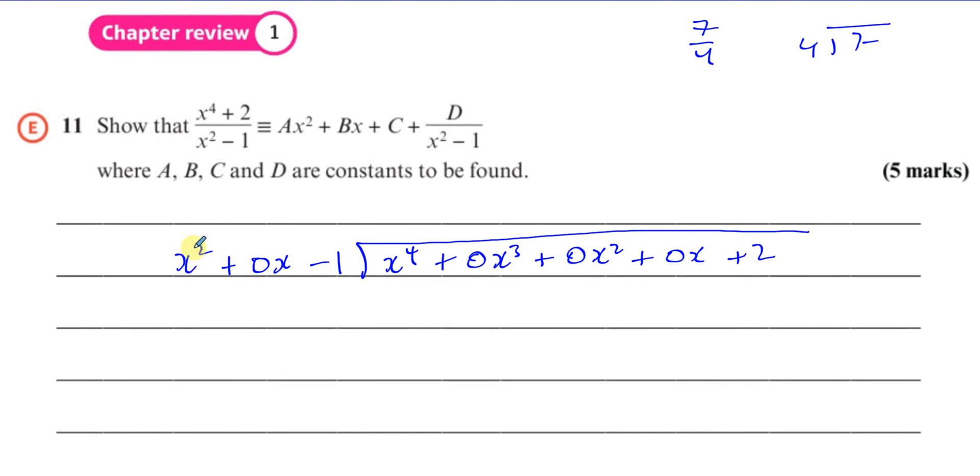Then we say, okay, x squared fits into x to the power of 4, x squared times, because x squared times x squared is x to the power of 4. Then you multiply x squared by these three terms here. So you're going to have x to the power of 4. That must always be the same, otherwise you've done something wrong. x squared times 0x is going to be 0x cubed. And x squared times minus 1 is minus x squared.